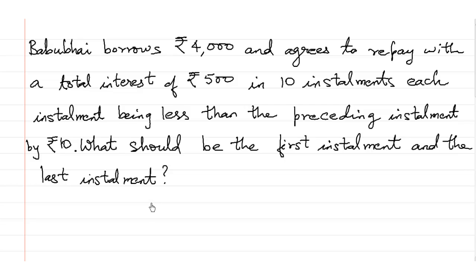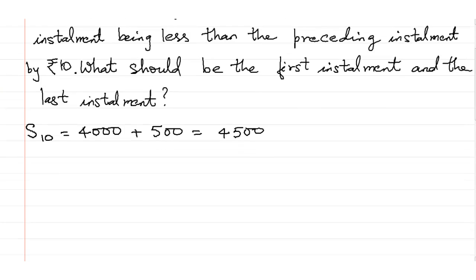The second question is: Babu Bhai borrows Rs. 4000 and agrees to repay with a total interest of Rs. 500 in 10 installments, each installment being less than the preceding installment by Rs. 10. What should be the first installment and the last installment? So Babu Bhai has agreed that he will pay back the Rs. 4000 that he had borrowed along with 500 interest. So he will be returning back Rs. 4500.